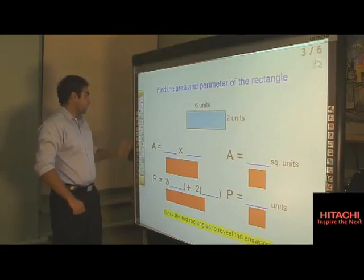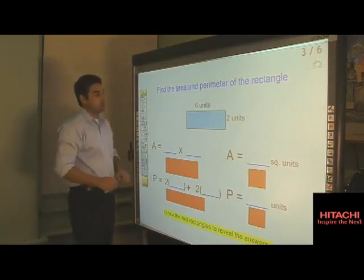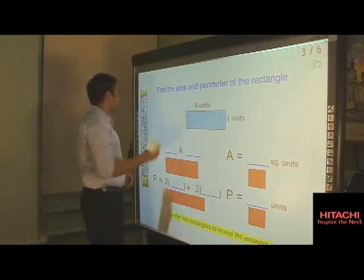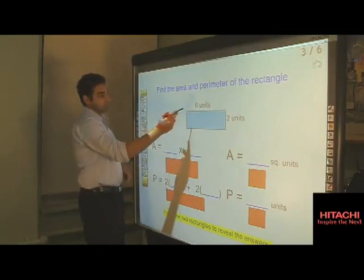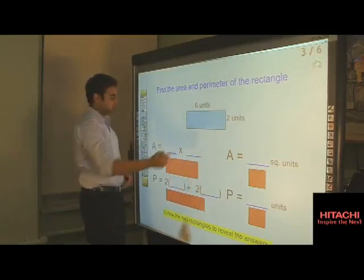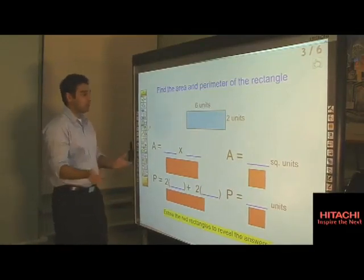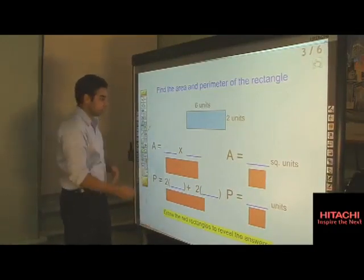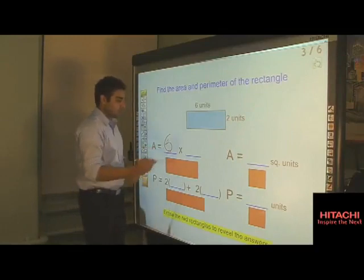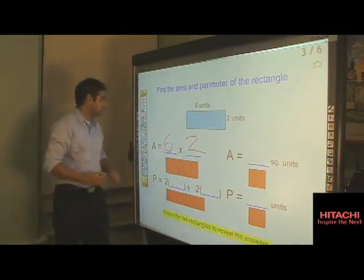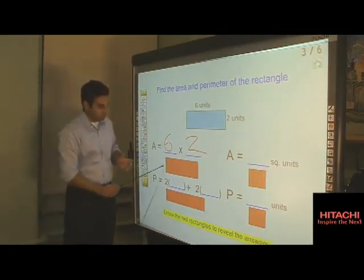Now here's the lesson itself. We're describing the area and perimeter of this rectangle, which is 6 by 2 units. A student can pick up a pen and come to the board to answer this question. To find the area, 6 times 2. If we want to reveal the answer, we pick up our eraser and reveal it.